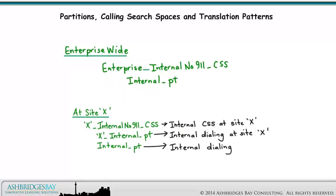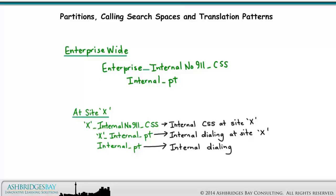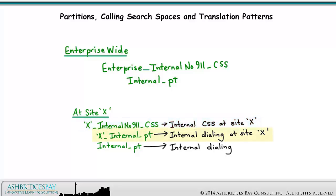For internal calling search spaces, we'll have a single enterprise-wide calling search space named Enterprise Internal No 911 CSS, containing only the enterprise-wide internal partition, Internal Partition. Each Site X will have a calling search space — X Internal No 911 CSS — containing a Site X Internal Partition for Site Abbreviated Dialing at Site X, and the enterprise-wide Internal Partition.